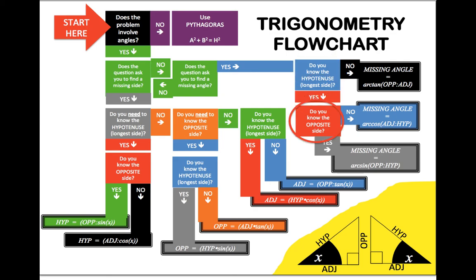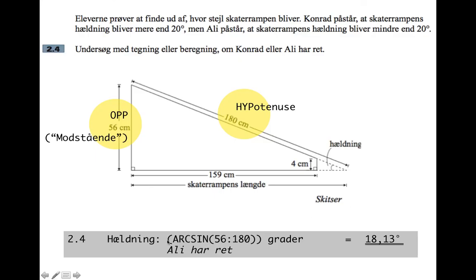So the missing angle is going to be the arc sine or inverse sine of the opposite divided by the hypotenuse. So working that out, we've got the gradient is the arc sine or inverse sine of 56 divided by 180, and that works out to 18.13. So the angle in there is 18.13, and Ali was right.